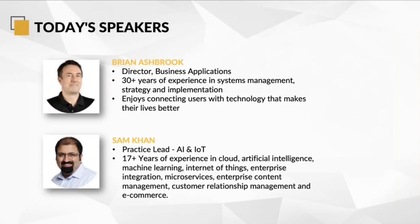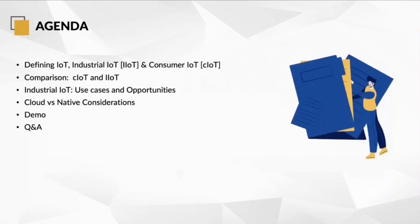We're going to talk about the big topics we're going to cover today. Our agenda is: we're going to define what IoT is, just to make sure we're all on the same page and how that differentiates between industrial and consumer IoT. There are different purposes and applications behind those. We'll talk specifically around the use cases within industrial IoT — that is the focus of our webinar today — and some of the opportunities and benefits that presents. We'll also discuss cloud versus native deployments of your IoT and how those scale, provide security, and various aspects of implementation.